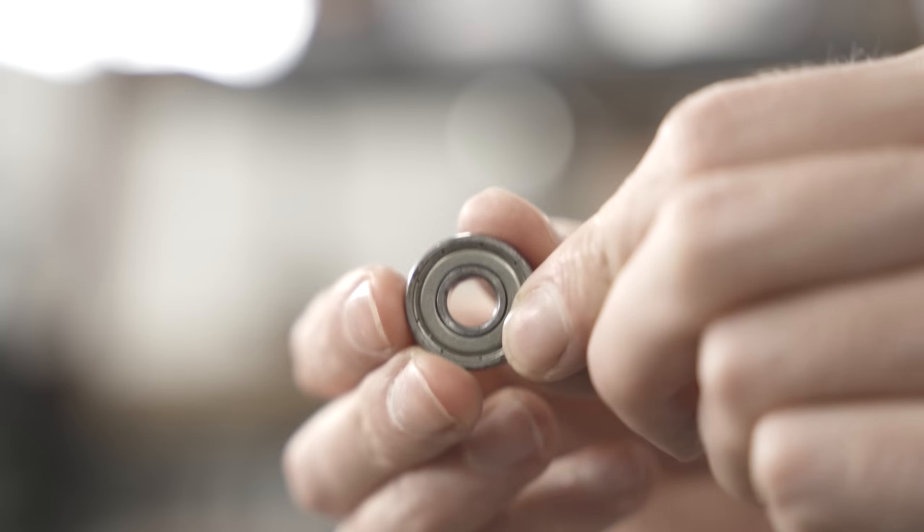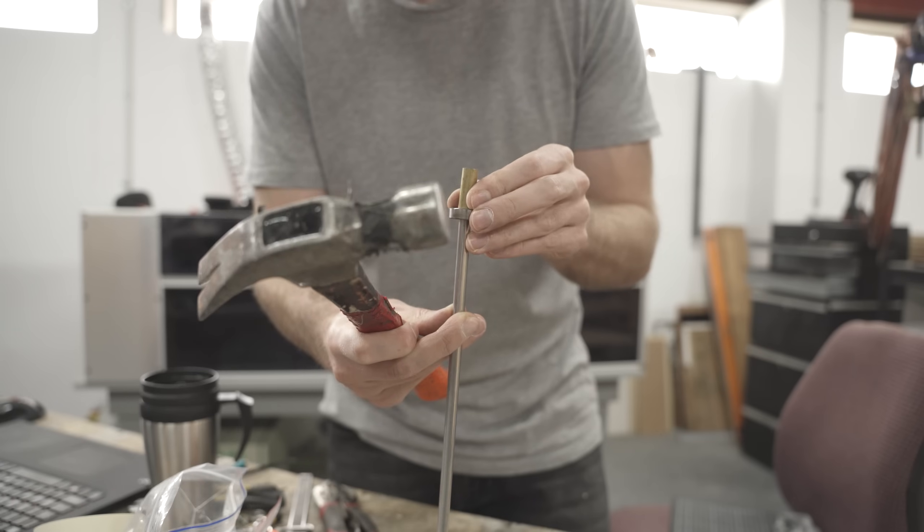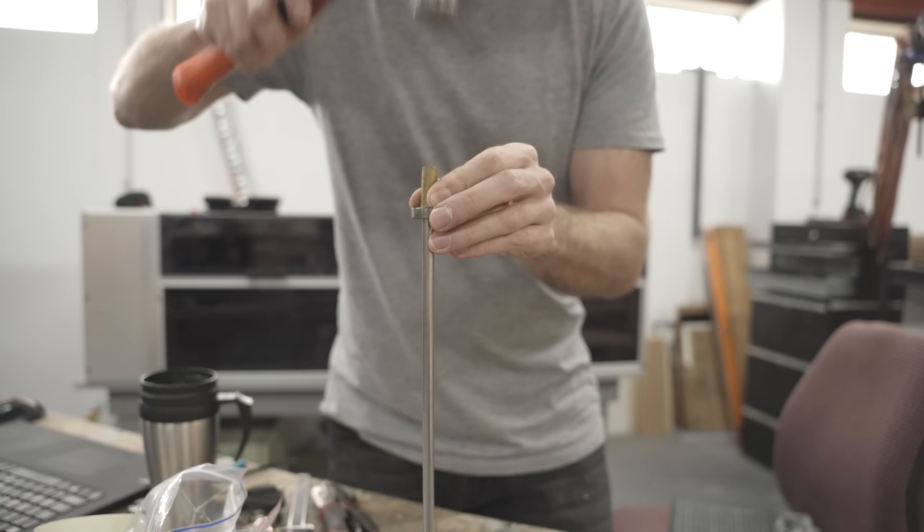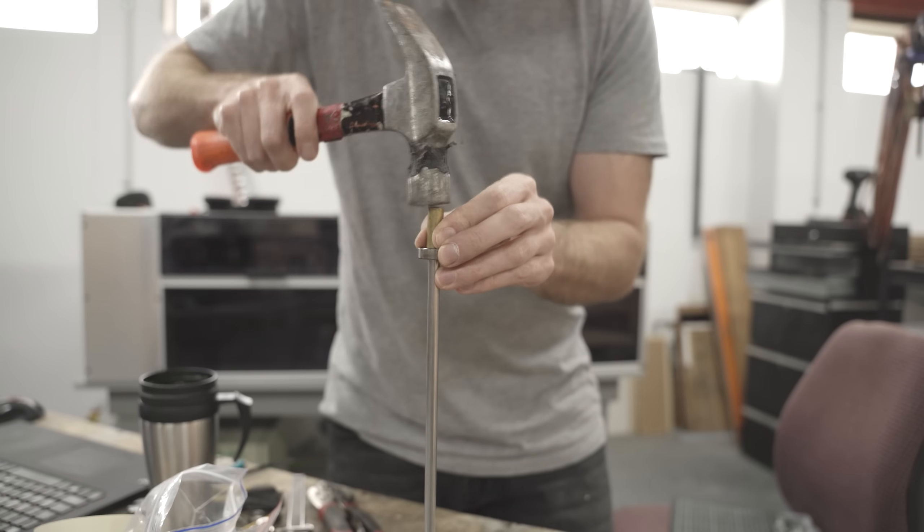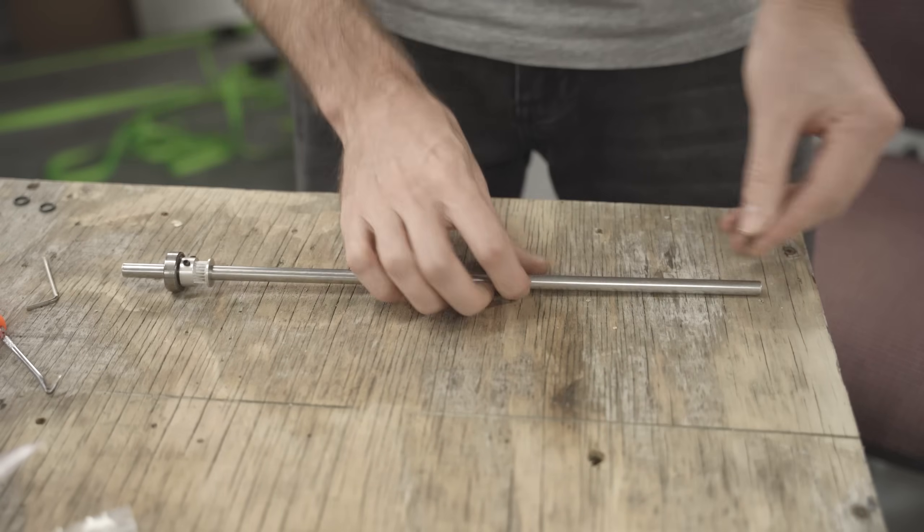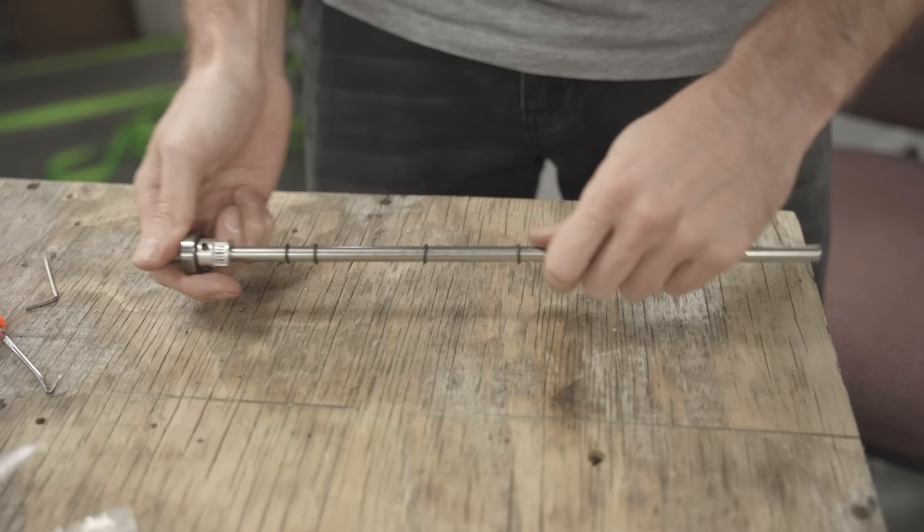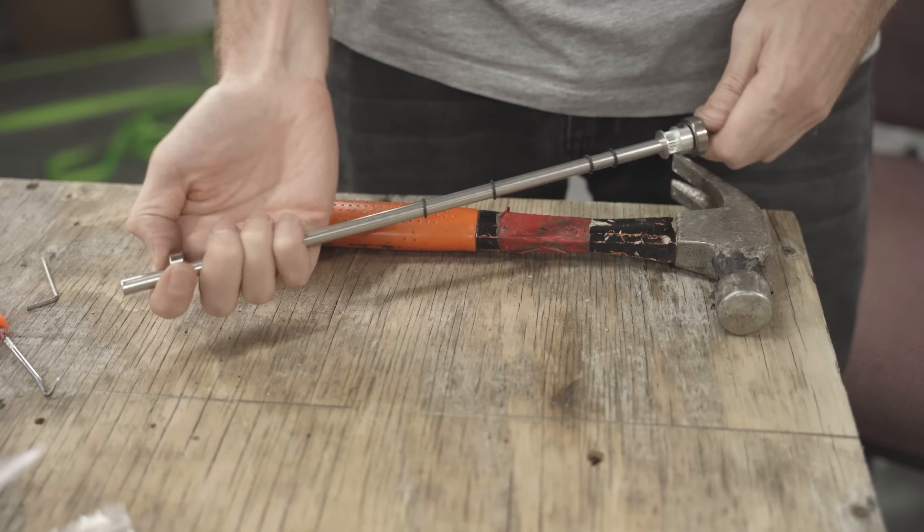Now I can make the roller assembly starting with the classic skateboard bearing which is gently persuaded into the 8 millimeter steel rod. Next on is a 16 tooth pulley, a few rubber O-rings and finally another bearing.